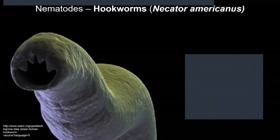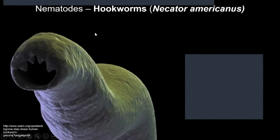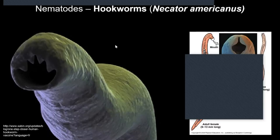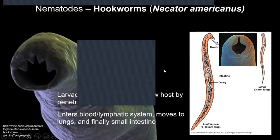Let's take a look at another worm. This one is important geographically and has been very important historically — hookworms. There are actually a couple of different species. The common one found in the Americas is Necator americanus, although it's believed to have actually originated from the African continent and been brought over with the transatlantic slave trade. These things are really scary looking — like something out of a horror movie. There's actually a male and female version, and they're found in the digestive system.